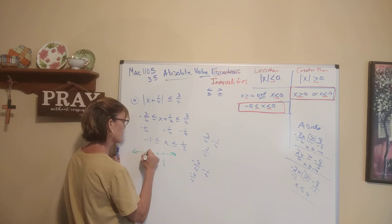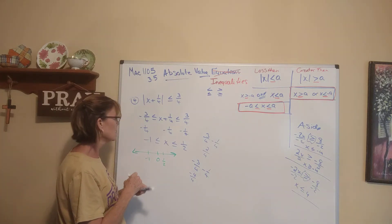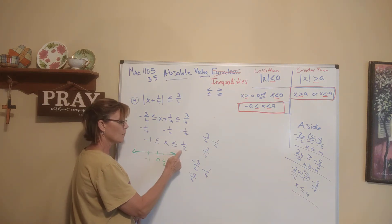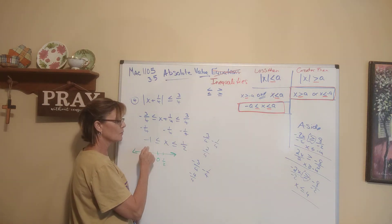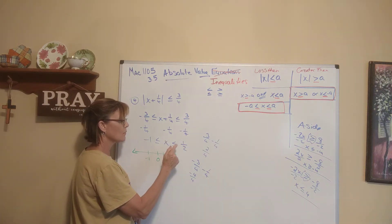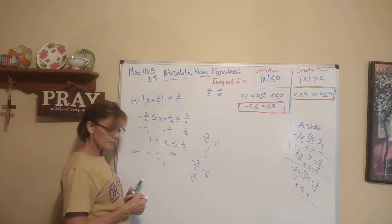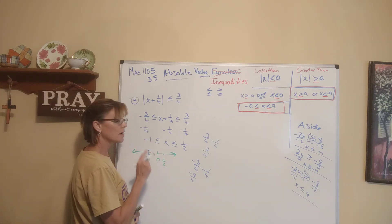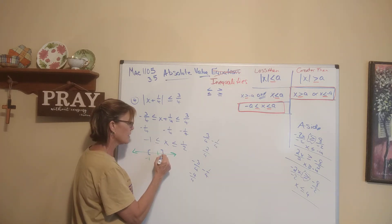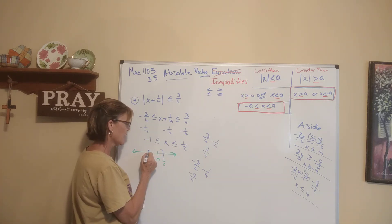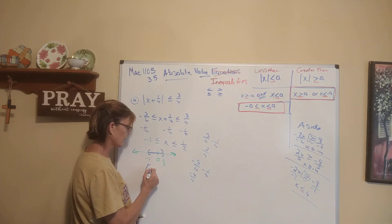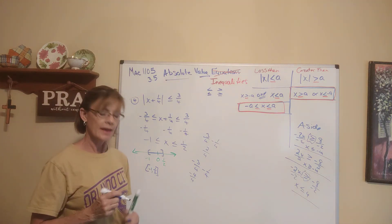This is 1 half and this is negative 1. X is between negative 1 and 1 half, and at negative 1 and 1 half it equals those values. So we put a bracket on negative 1 because it equals that, and a bracket on 1 half because it equals that, and shade in between. Interval notation would be negative 1 to 1 half with brackets.